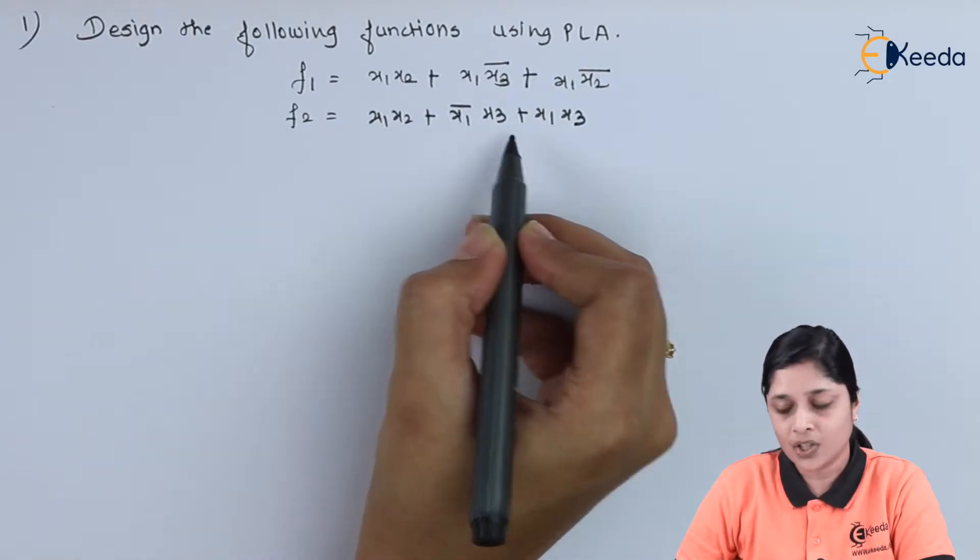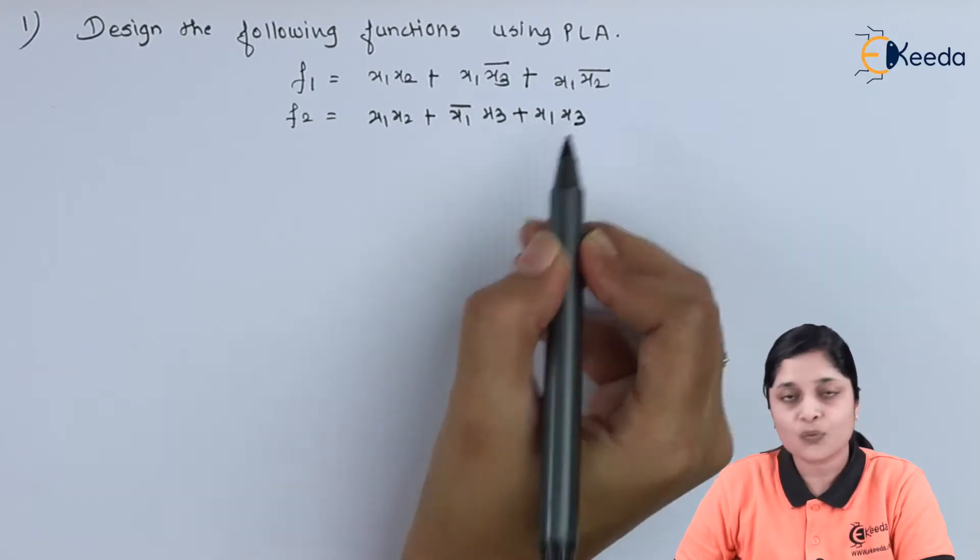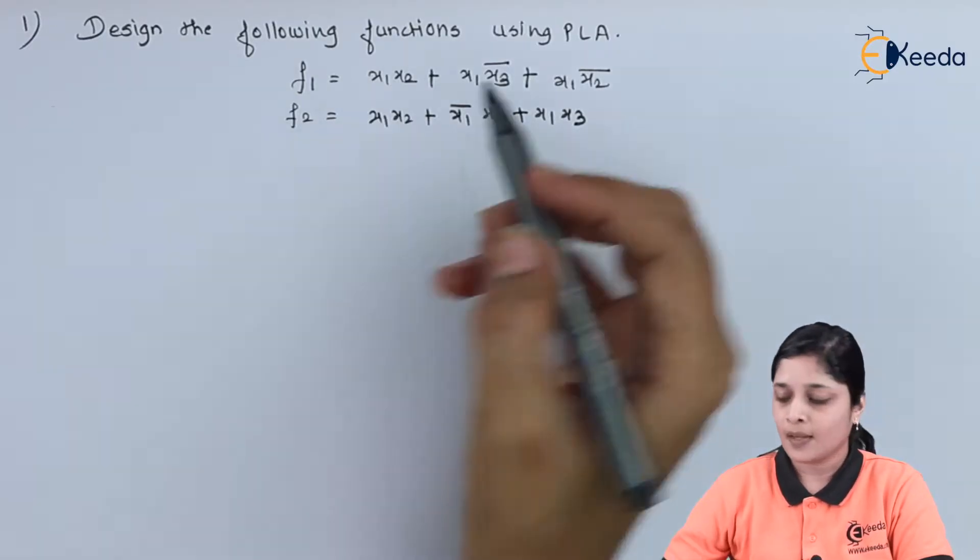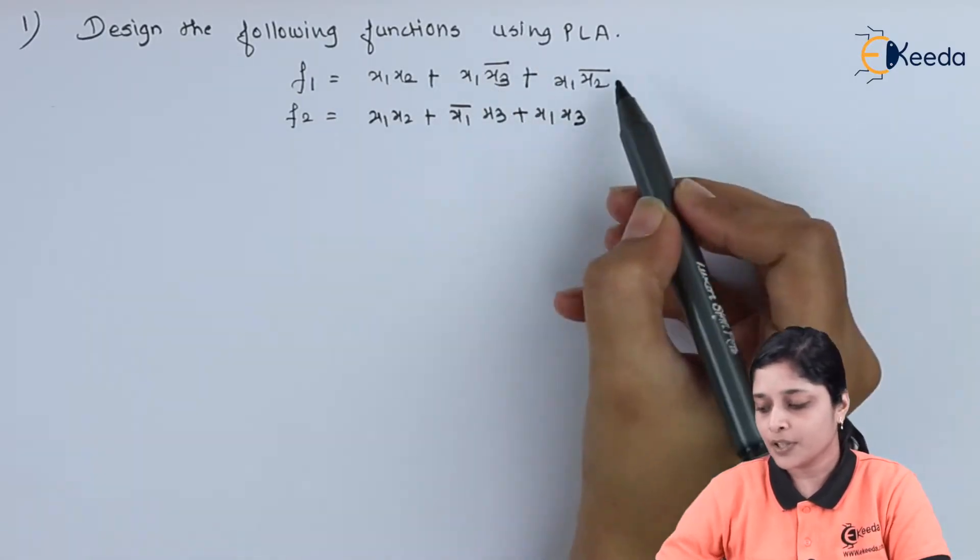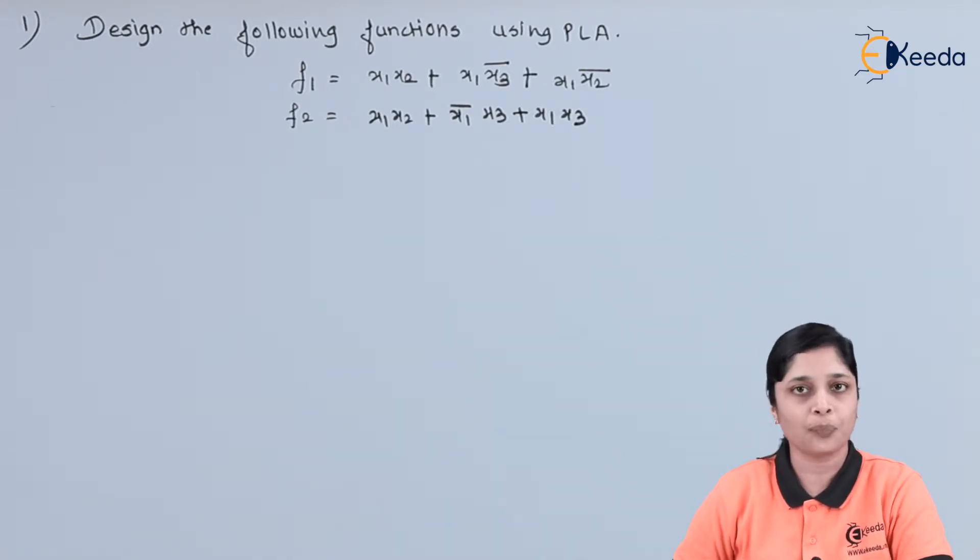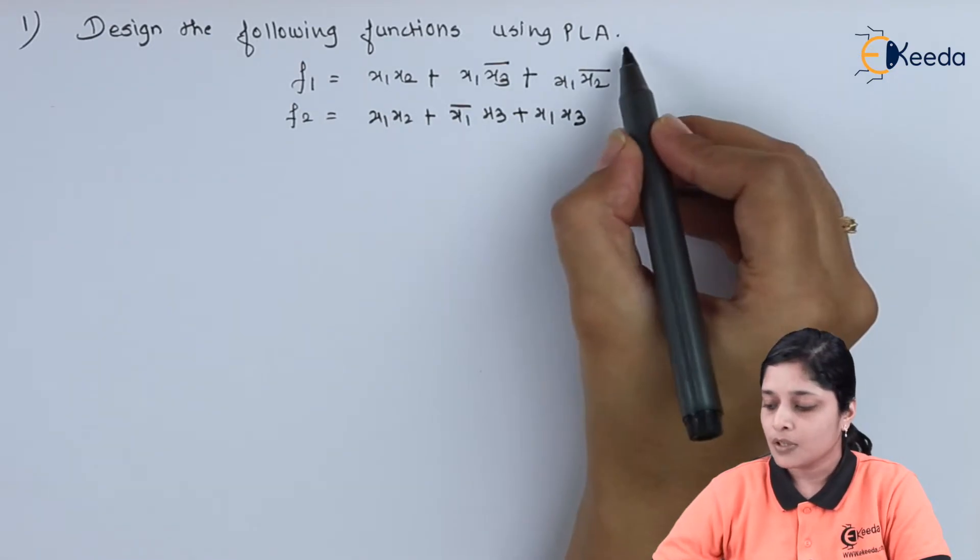And f2 equals to x1 x2 plus x1 x3 plus x1 x3. Now we have to implement these two functions with the use of PLA.